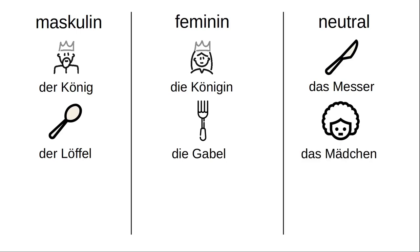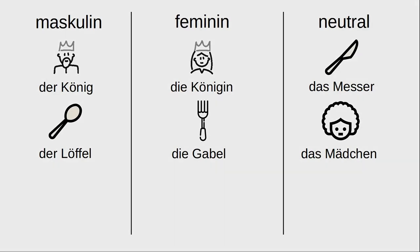And believe it or not, 'das Mädchen', the girl, is neuter. I once asked my mom, who was from Austria, why 'das Mädchen' was neuter, and she said it's because girls aren't supposed to know about sex before they get married. If that doesn't get me some comments in the comments section, I don't think anything will — and let's call that an end to this reel.